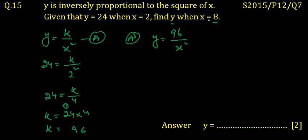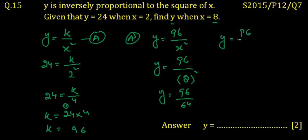Now we have to find the value of y when x is equal to 8. So we put y as it is, and instead of writing x we fill in the value 8. So it is 8 squared. So y is equal to 96 upon 64.